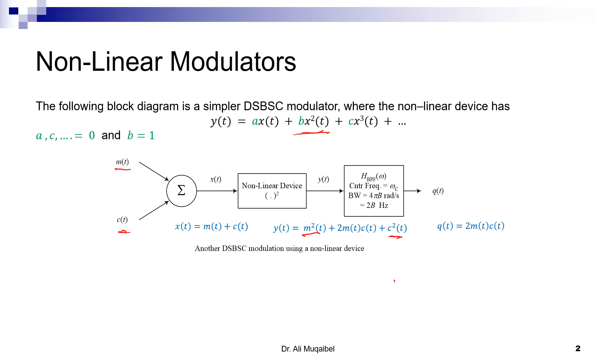If we have a band-pass filter centered around the carrier with bandwidth 2b, we can get the double-sideband suppressed-carrier modulation, which is the product of the two. There's a scaling factor of 2, and as we mentioned, constant scaling is not a distortion. The point is that we were able to multiply M by C using the non-linearity in the device.